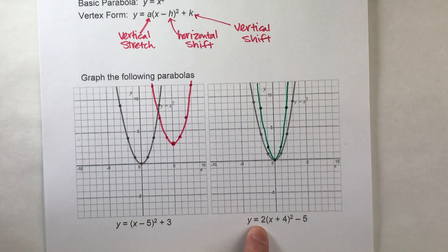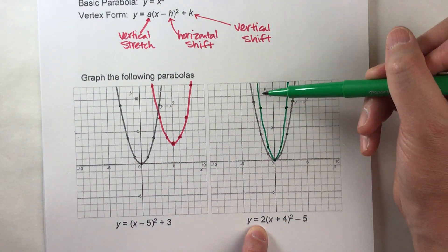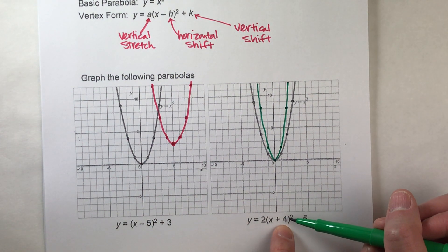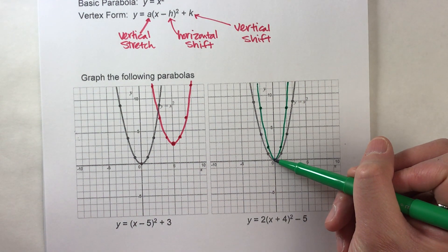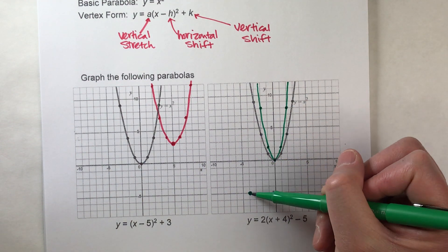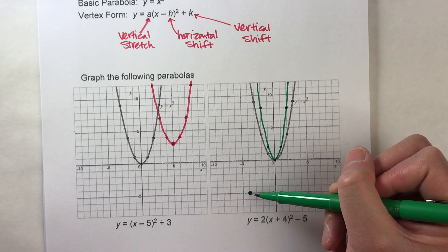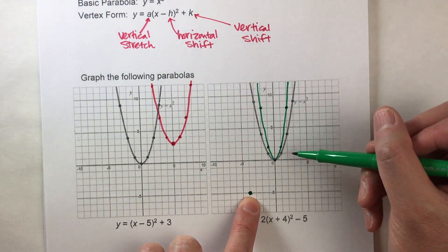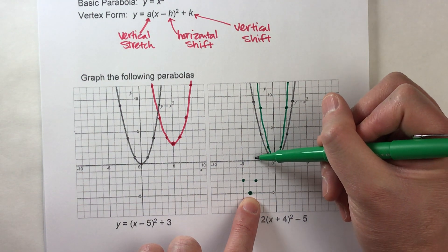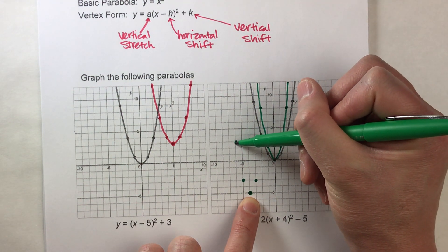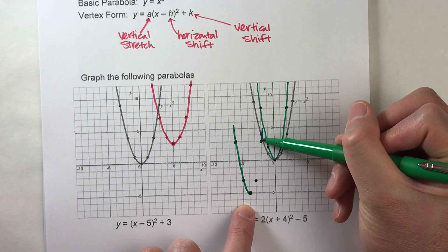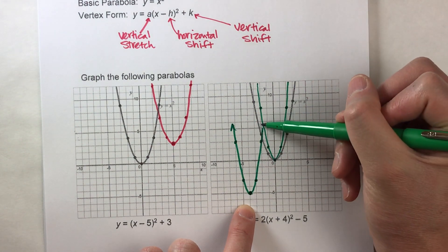We're not done because all we did was apply the 2. Now that we have the basic shape of the stretched parabola, we can shift it. So when we shift it, it's 4 to the left and 5 down. 1, 2, 3, 4 to the left, 5 down — there's where my vertex is going to go. It's going to go from here, 4 left, 5 down, to here. Now I'll just copy the pattern of this parabola that I made before, and when I sketch it in, there is my new parabola.